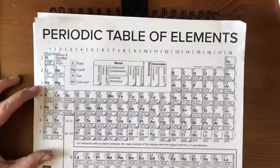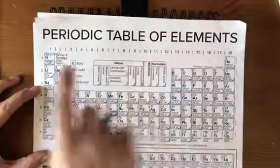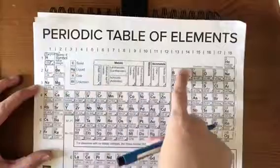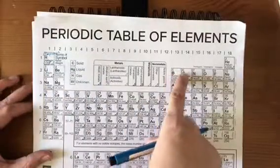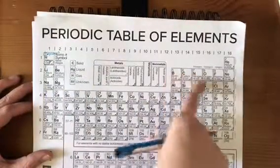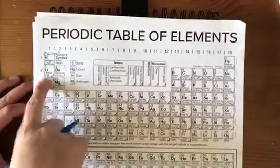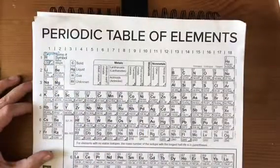So keep that in mind. We increase the number of protons as we go across the table. Every time we add a proton, we are changing the identity of the atom. Anytime we change the number of neutrons, we change the mass of the atom.